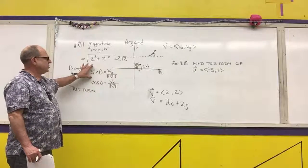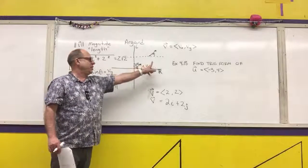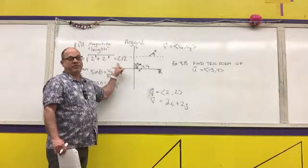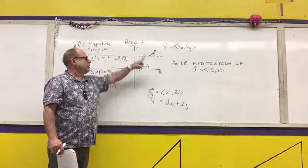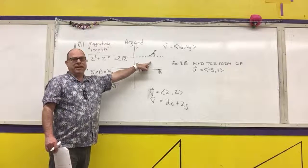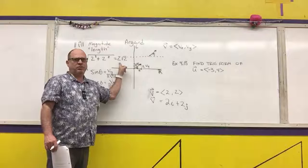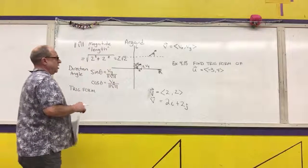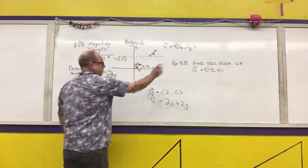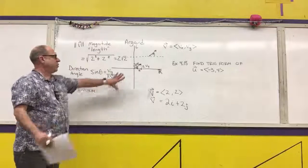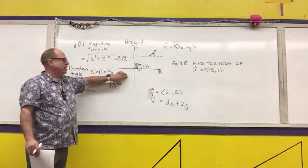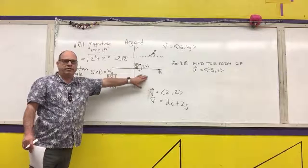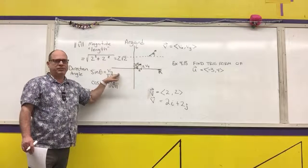For a quadrant 2 vector, the calculator's inverse sine gives a quadrant 1 answer that must be converted. Similarly, for a quadrant 3 vector, the inverse sine gives a quadrant 4 answer that needs to be transferred to quadrant 3. The trig form of a vector uses both the direction angle and the magnitude.